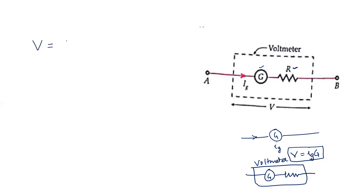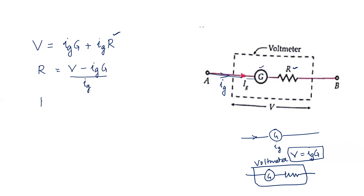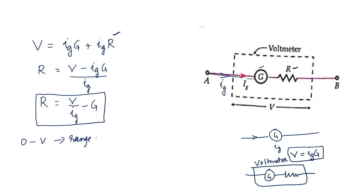The galvanometer alone could only measure up to V = i_g × G. After adding series resistance R, the voltmeter measures V = i_g × G + i_g × R. The current through the galvanometer is i_g. So the equation is: V = i_g × G + i_g × R. Solving for R: R = (V − i_g × G) / i_g = V/i_g − G. This R is the high resistance placed in series to increase the voltmeter's range.